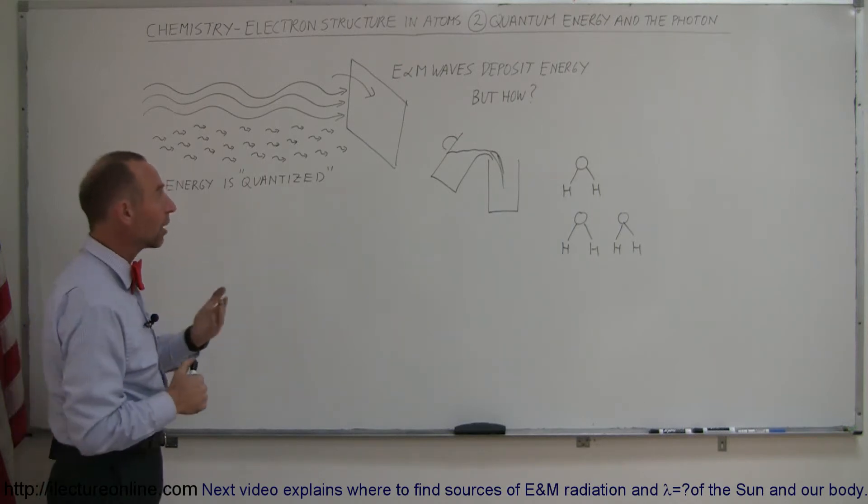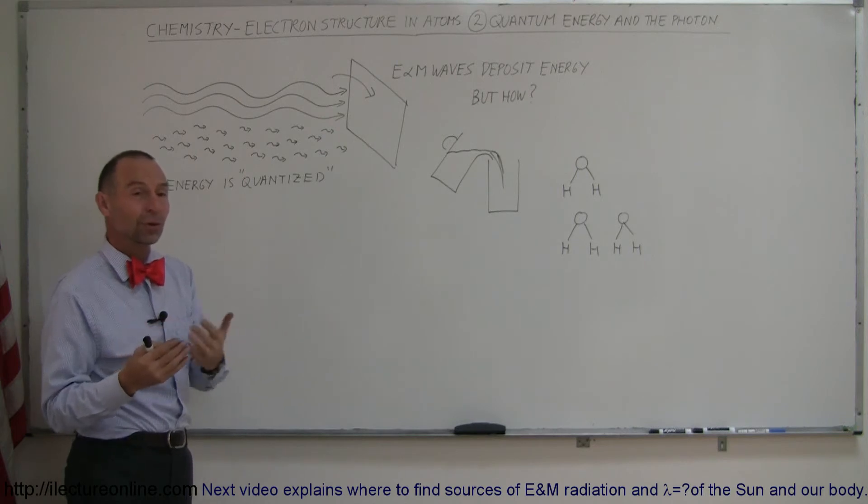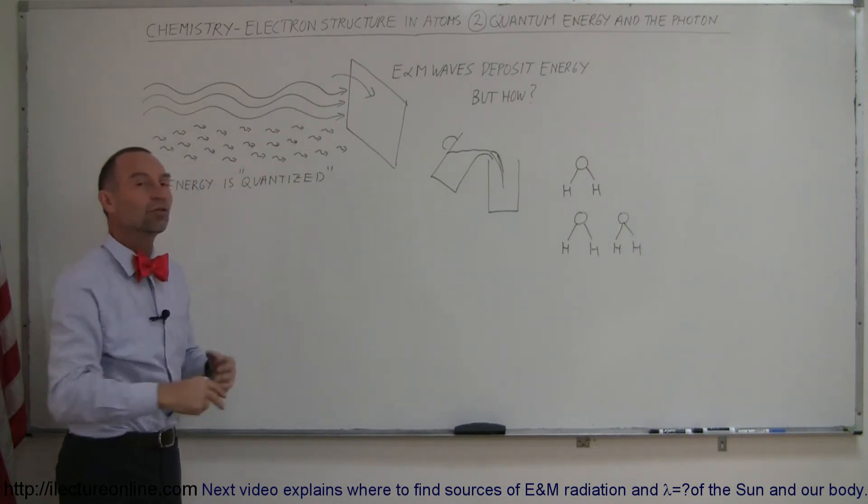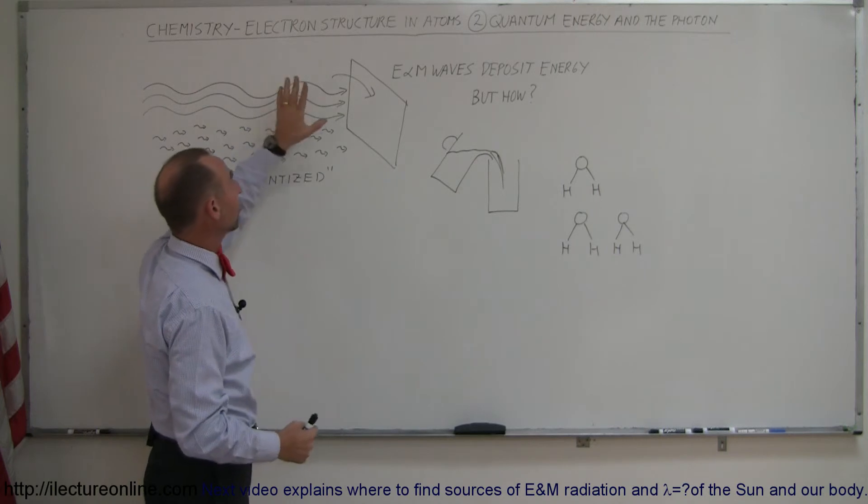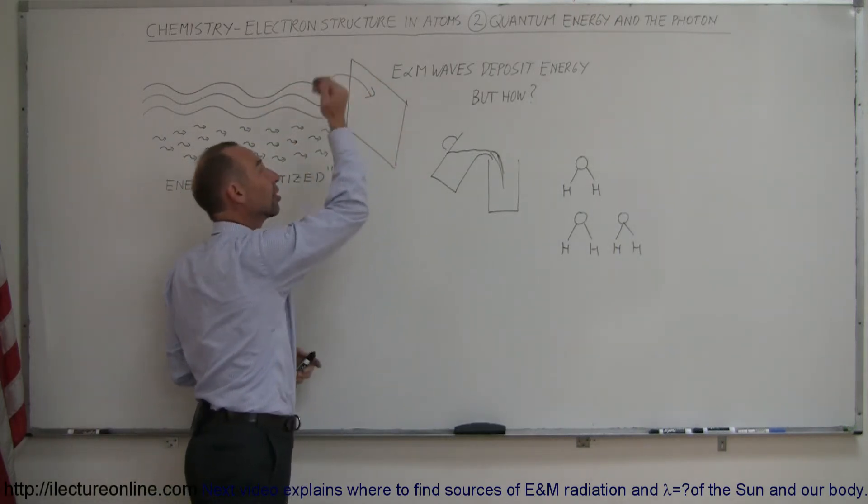Max Planck is the one that really brought this theory forward and believe it or not, most scientists around the world thought he was absolutely wrong. They thought there's just no way that energy can be quantized. Energy had to just be a continuous stream of energy. So when electromagnetic radiation goes through space and hits an object, the energy is simply deposited onto the object and the object warms up.